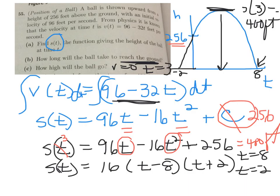I have one last problem: number 55 on page 326. A ball is thrown upward from a height of 256 feet above the ground. The ball goes up and then comes back down. They give us that velocity with respect to time equals 96 minus 32t, and they ask us to find the position function.